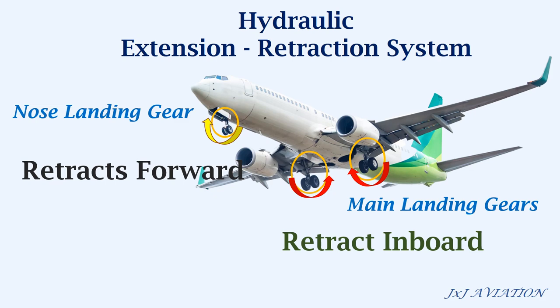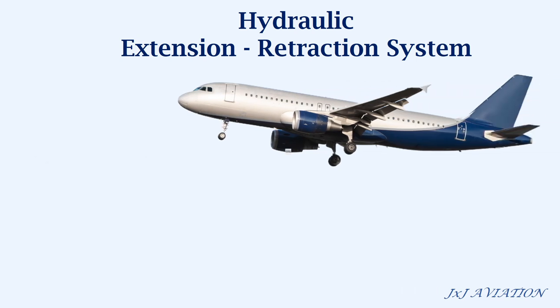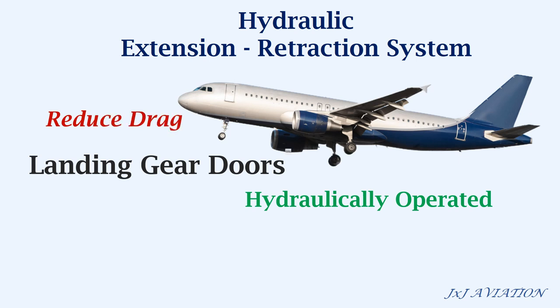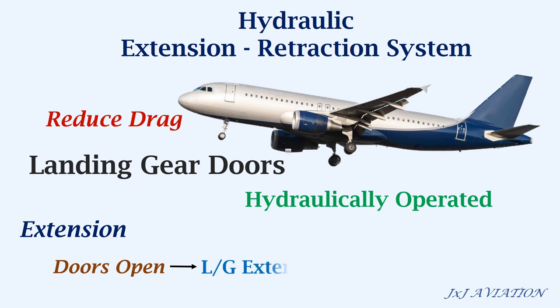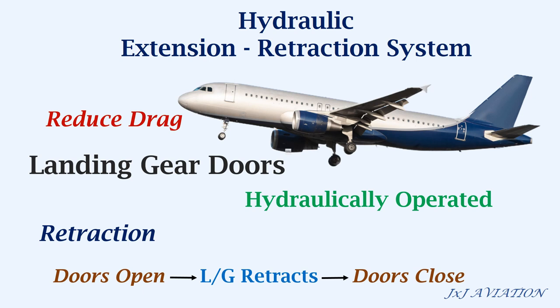Let's see how the extension and the retraction sequence changes if doors are also installed on the landing gears. On some aircraft, separate doors are installed for the main landing gears and the nose landing gear. These doors are hydraulically operated and are installed to reduce the drag further. For the extension sequence: the doors open, the landing gear extends, and after full extension of the landing gear, the doors will close automatically. For the retraction sequence: the doors will open, the landing gear retracts, and after full retraction of the landing gear, the doors will close.